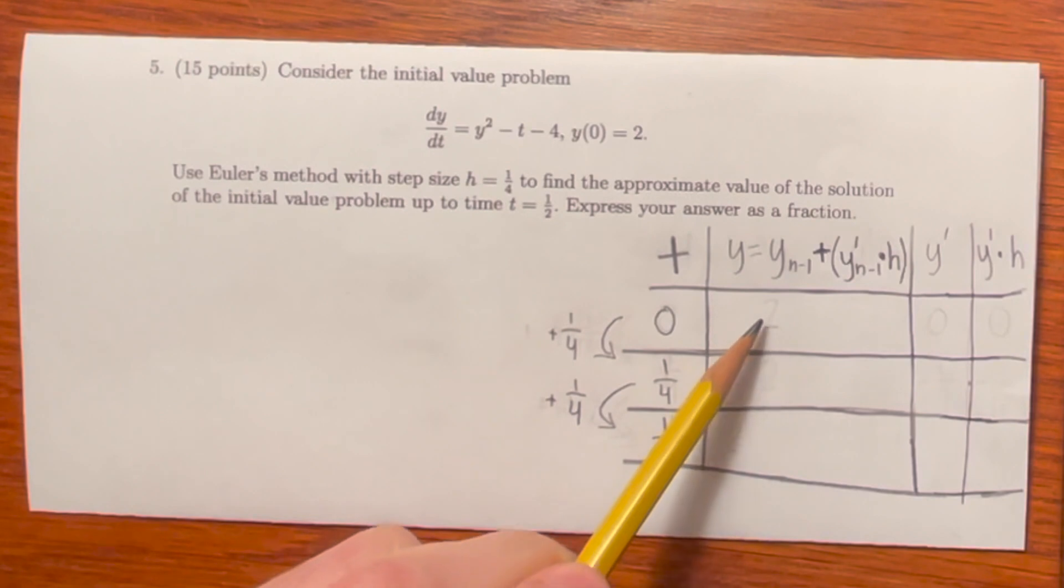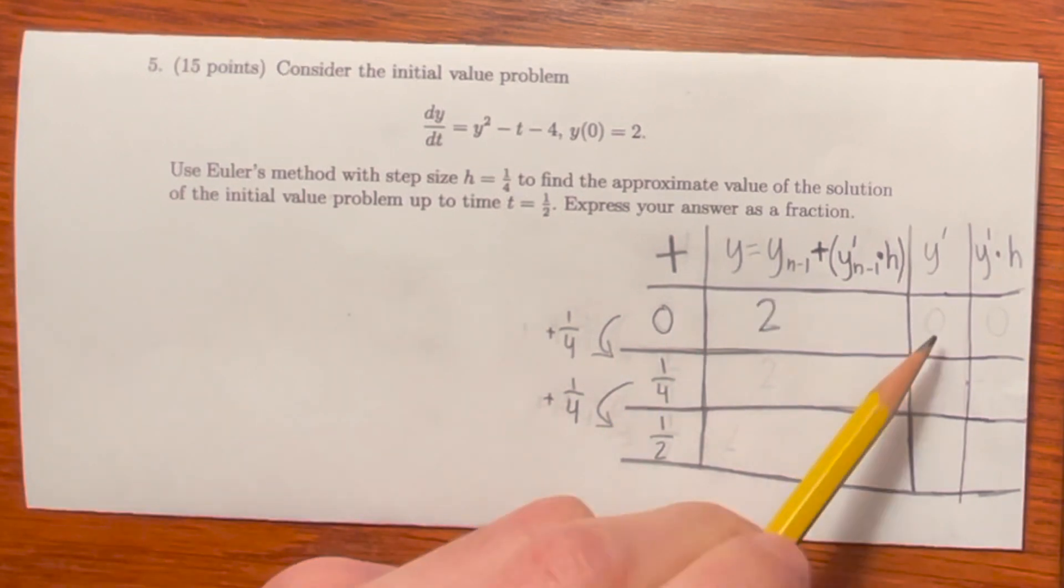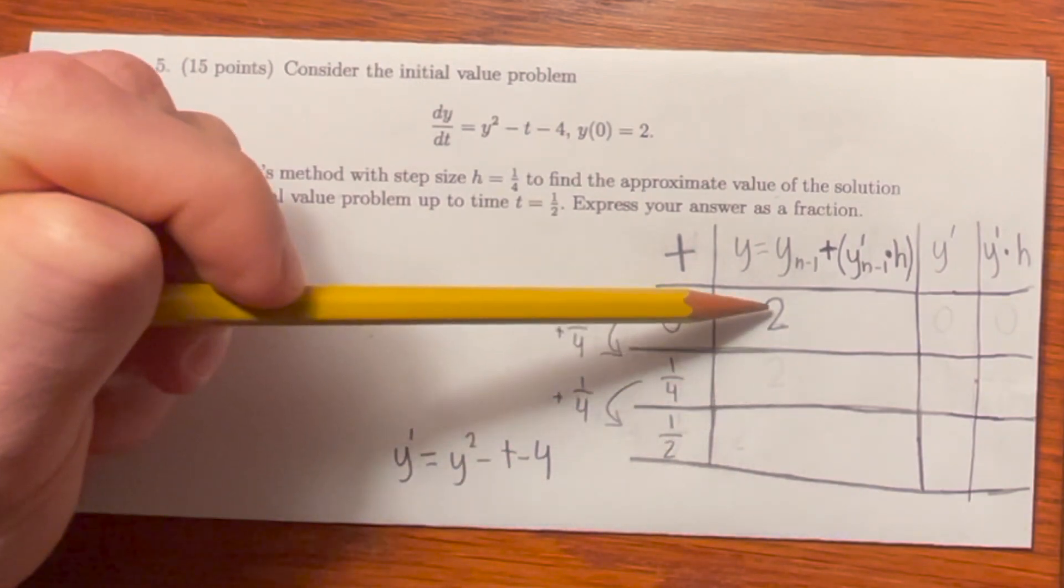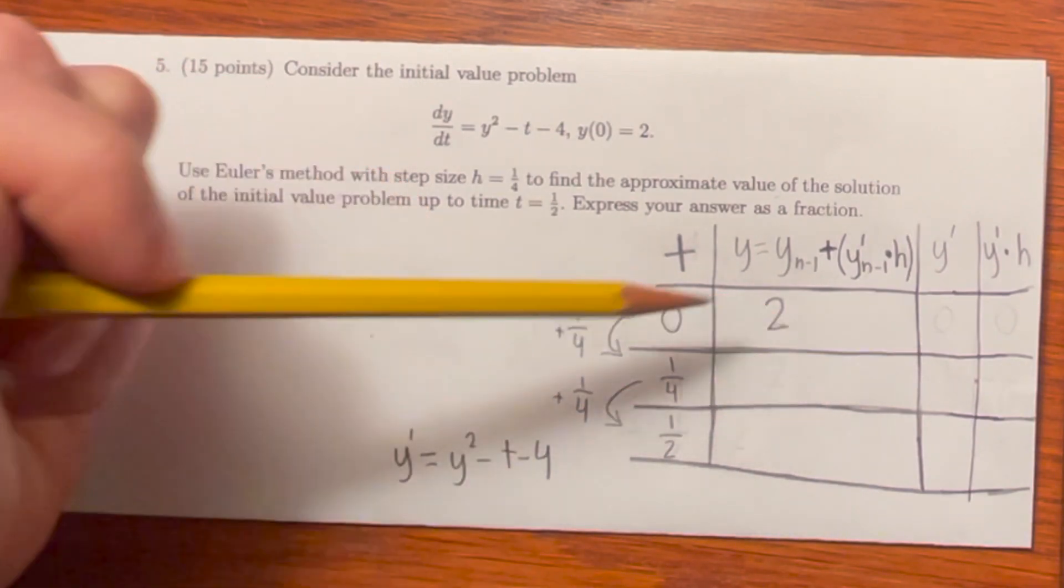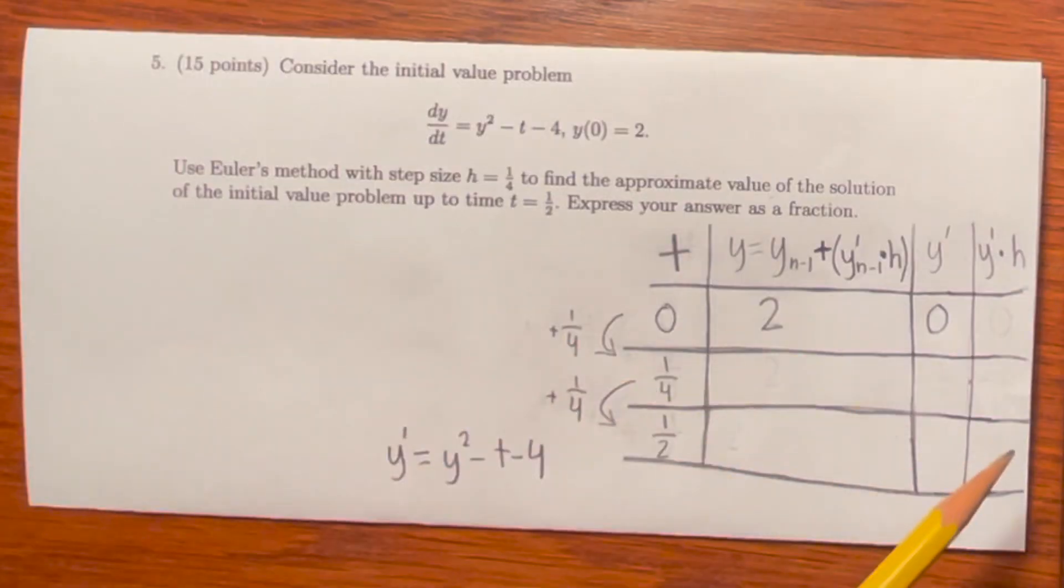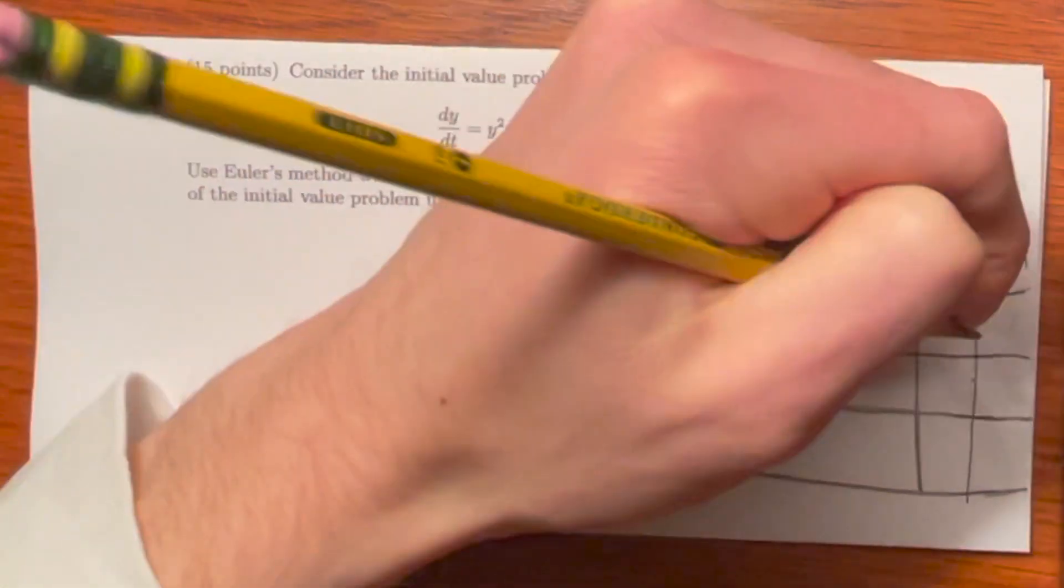For the first y value, we're actually given that in the initial condition once again. y of 0 is equal to 2. y prime of 0 can be calculated using the differential equation given in the problem. y prime is equal to y squared, so 2 squared, minus t, which is 0, minus 4. Therefore, y prime is equal to 0. And then if you multiply h, which is equal to 1 fourth, times 0, you get 0.